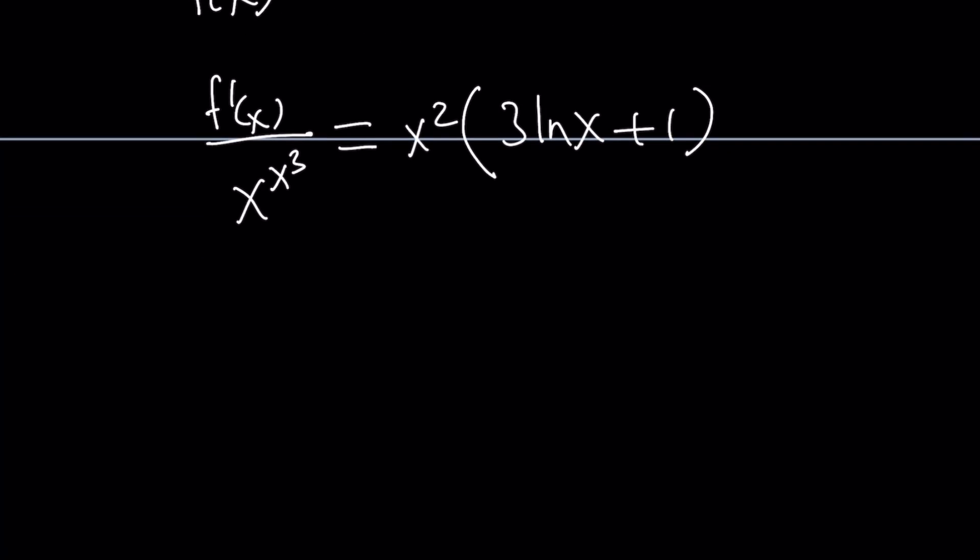Now we can cross multiply: f prime of x equals x to the power x cubed times x squared times 3 ln x plus 1. Let's not combine the two powers for right now. We want to set this product equal to 0. We want to find the critical points where we might have a horizontal tangent where the derivative changes sign going from positive to negative or negative to positive because that kind of indicates a maximum or a minimum. When we set this equal to 0, we get three factors.